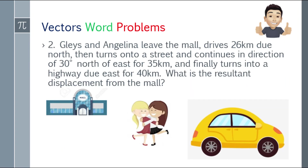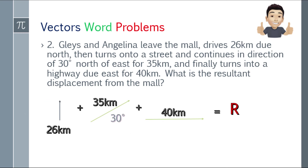And the last problem: Glaze and Angelina leave the mall, drive 26 kilometers due north, then turn onto a street and continue in a direction of 30 degrees north of east for 35 kilometers, and finally turn onto a highway due east for 40 kilometers. What is the resultant displacement from the mall? Let's analyze the problem: 26 kilometers north, 35 kilometers at 30 degrees north of east, plus 40 kilometers due east. We need to find the resultant. First step: construct a table for x and y axis components.